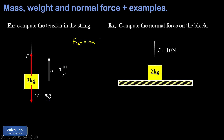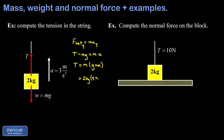To analyze the problem, we write down Newton's second law: F net equals ma. There's nothing in the x direction, so this is just an analysis in the y direction. Choosing upward as positive, tension is positive and weight mg is negative, giving T minus mg equals ma. Solving for tension, we add mg to both sides and factor out m, so T equals m times the quantity g plus a. Plugging in m equals 2 kilograms, g equals 9.8 meters per second squared, and a equals 3 meters per second squared, we get 25.6 newtons.